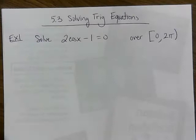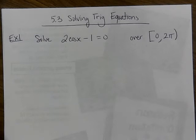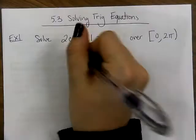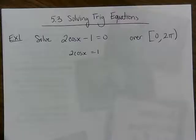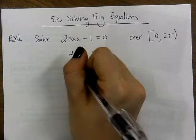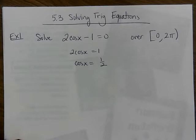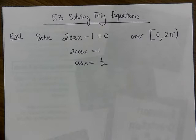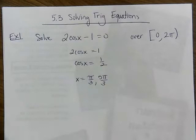Looking at this, we're trying to solve for cosine of x — isolate it. This is a very simple one. What do we do first? Add the 1. Then divide by 2. So now we ask ourselves, where is cosine equal to one half? Where is the x-value one half? Pi over 3 and 5π over 3.